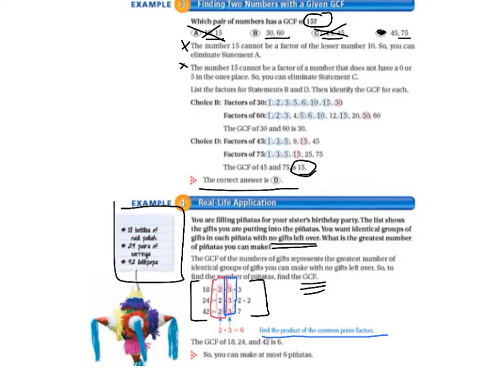So, we're going to multiply that. We find the product of the common prime factors, 2 times 3, which equals 6. So, the greatest common factor of 18, 24, and 42 is 6. So, you can make, at most, 6 piñatas.